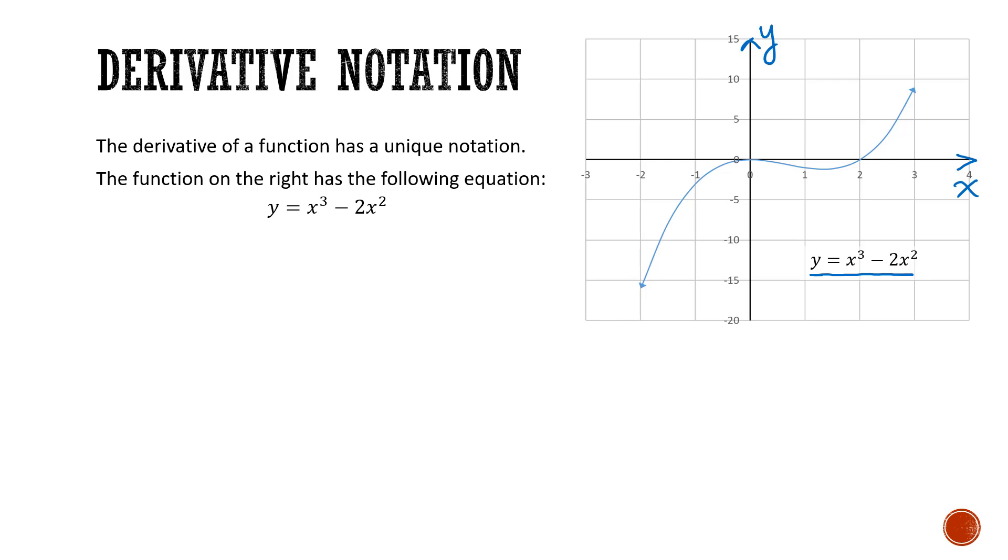Now, it's also worth noting that this could be written as f of x, as in this is a function of x, is equal to x cubed minus 2x squared. So this is our function notation. And these are equivalent because y is a function of x.